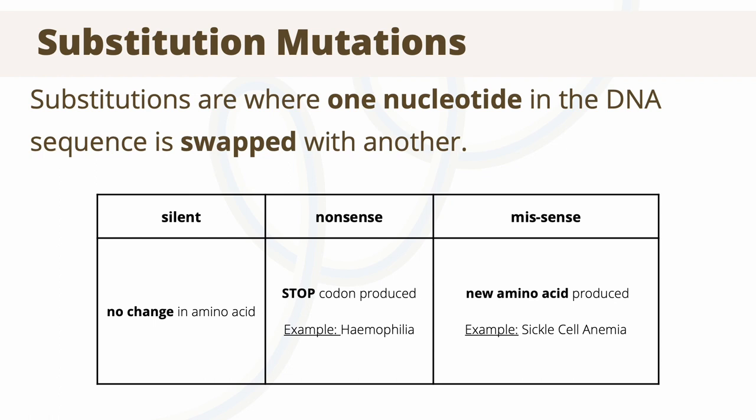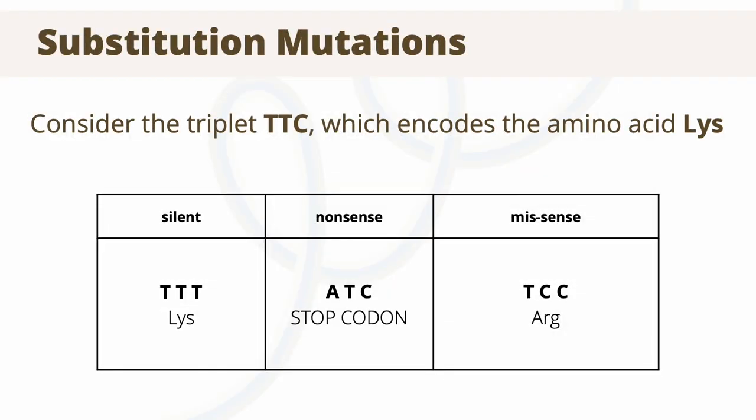Mutations to both copies of the hemoglobin gene can cause blood cells to change into a sickle or crescent shape. To look at an example: each amino acid is coded for by a single codon, which is a triplet of three nucleotides. Therefore, a mutation altering any of these nucleotides may alter the encoded amino acid. Prior to the point mutation, the triplet TTC encoded the amino acid lysine. If this triplet were changed to TTT, the encoded amino acid would still be lysine — since there is no change in the encoded amino acid, this is a silent mutation.